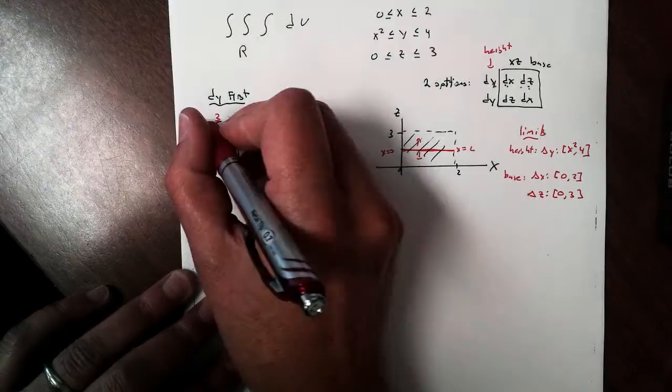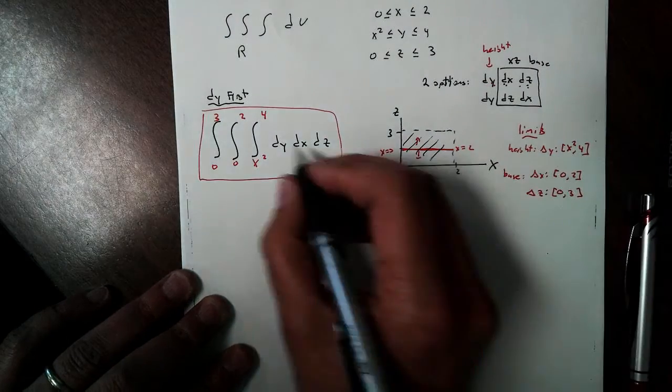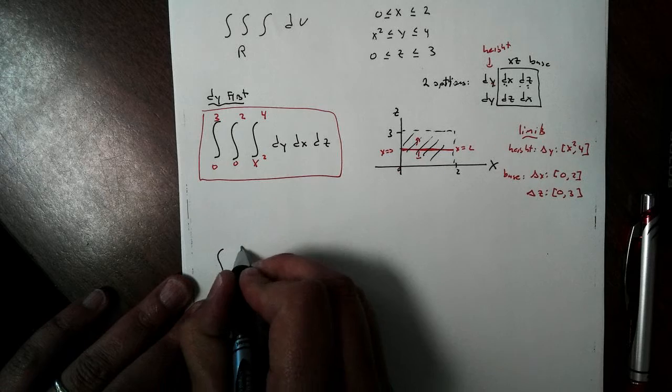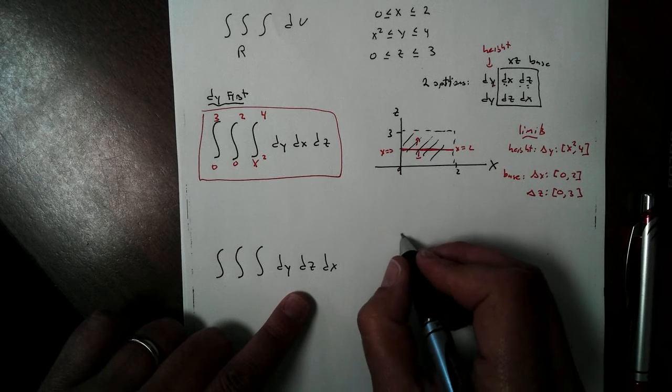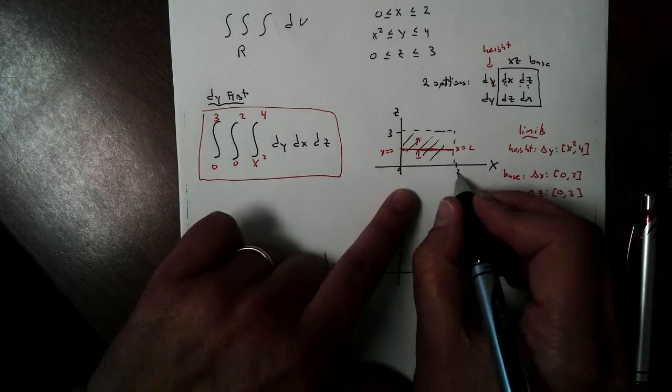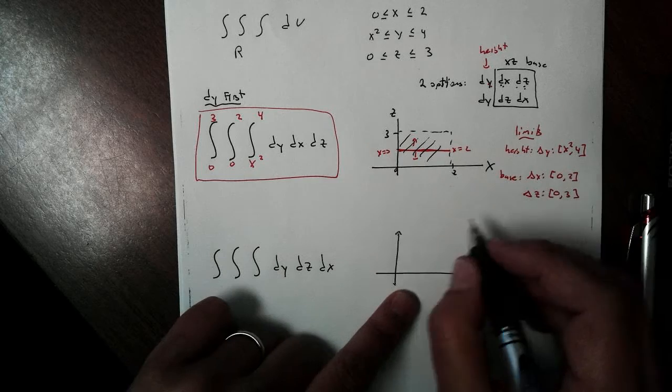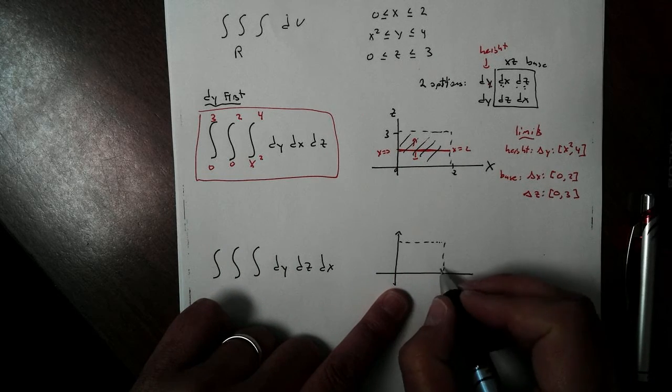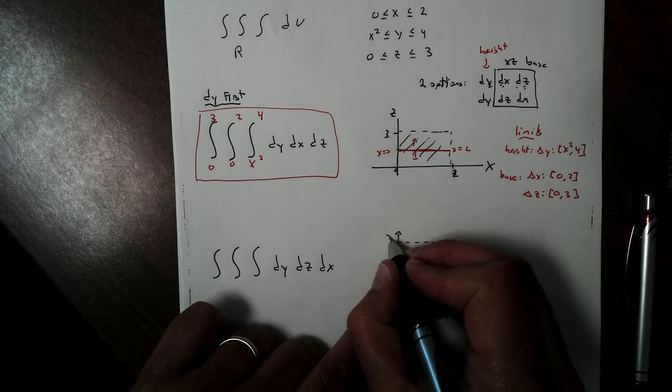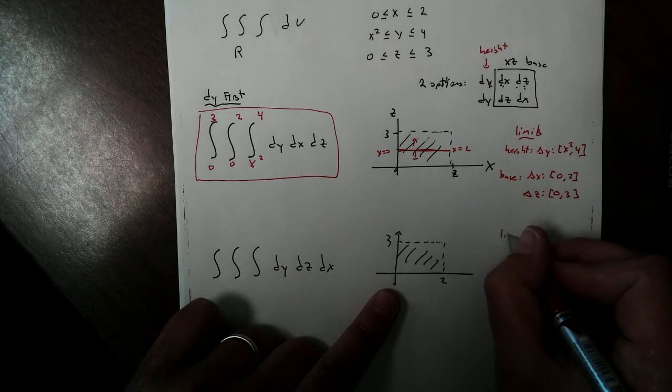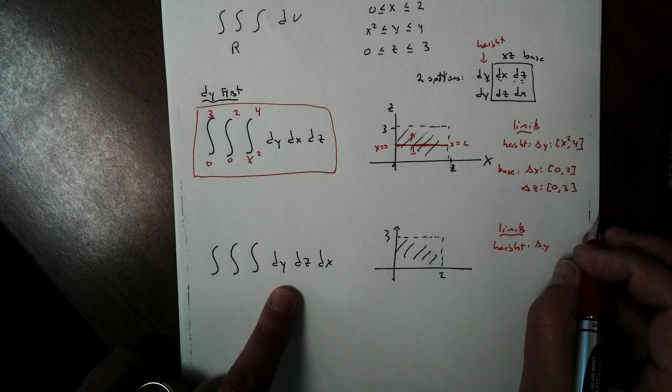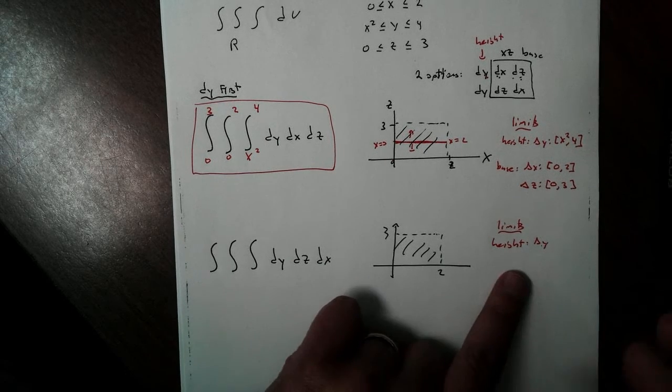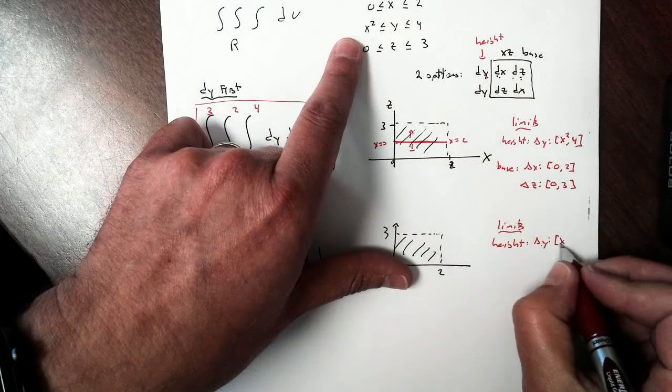Now, the last one we have, of course, with the DY first, we could write it as DY, DZ, DX. So, likewise, I'm going to graph this. It's the same shape. It's going to be the same shape. Just like it was on the first one. So, we're not changing our shape. We're just changing the order in which we'd look at our base. So, I'm still looking at this region. My height, so to get my limits, my height is going to be my change in Y's again because Y is first. So, my change in Y, that's going to go, and we already got that, X squared to 4.